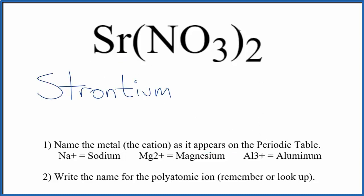Next we're going to write the name for the polyatomic ion. You either memorize that the polyatomic ion here, NO3, is the nitrate ion, or if you're allowed you can look it up. NO3, that's the nitrate ion.